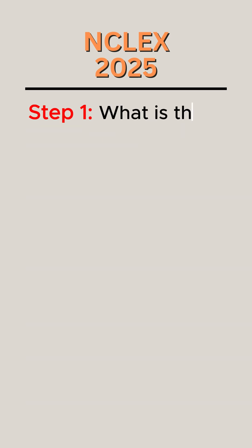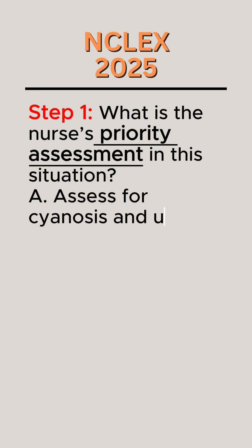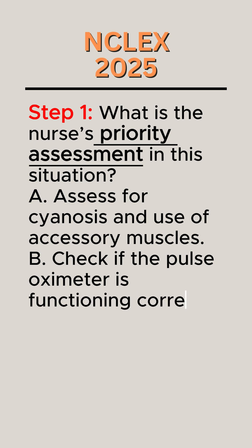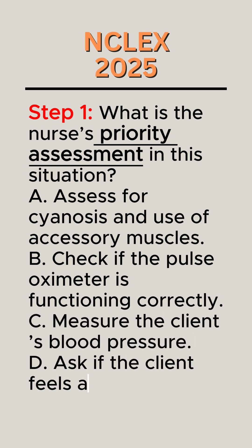Step 1. What is the nurse's priority assessment in this situation? A. Assess for cyanosis and use of accessory muscles. B. Check if the pulse oximeter is functioning correctly. C. Measure the client's blood pressure. D. Ask if the client feels anxious.